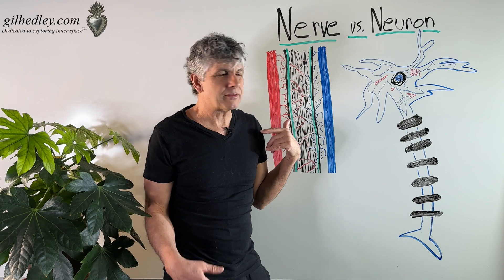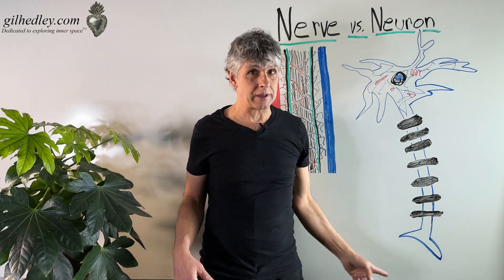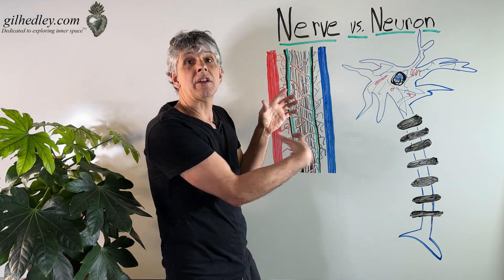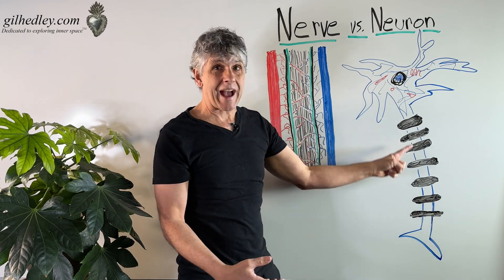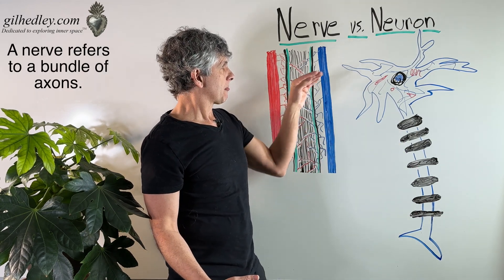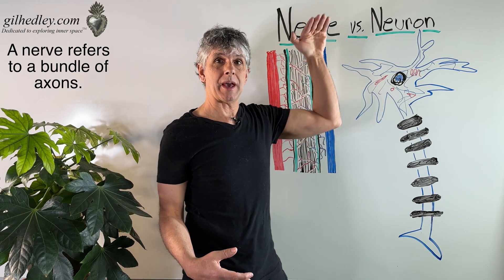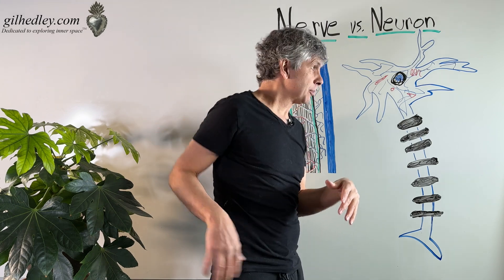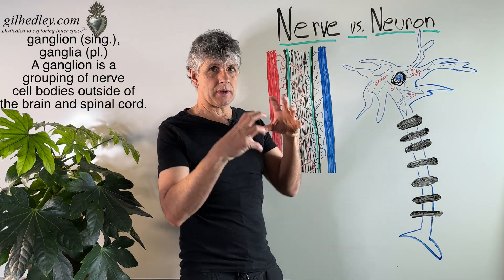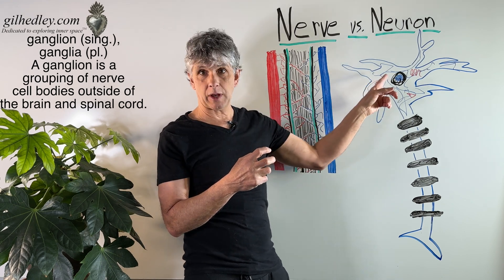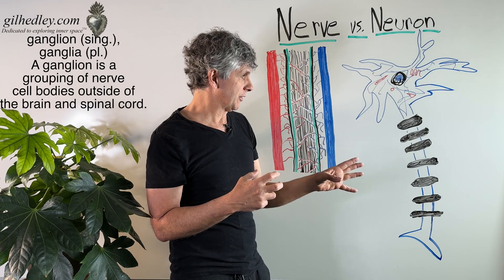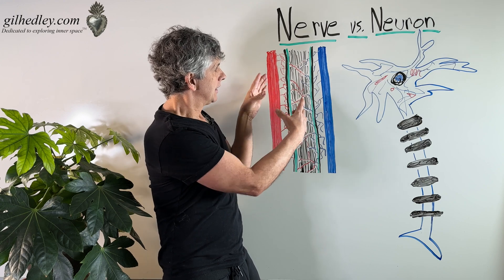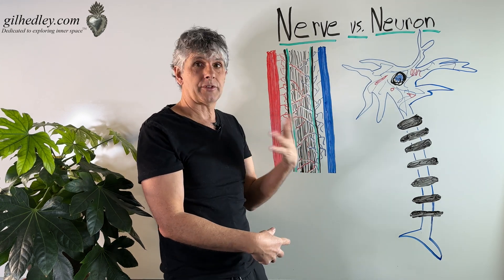So then what's a nerve? A nerve doesn't refer to a single neuron ever. A nerve refers to a bundle — a bundling of axons whose nerve cell bodies may be at a distance, say in the ganglia of the spinal nerves running along your spine. The ganglia being groupings of nerve cell bodies, of neuronal bodies, whose axons then proceed from the ganglion as a group bundled in what we call a nerve, say a spinal nerve.